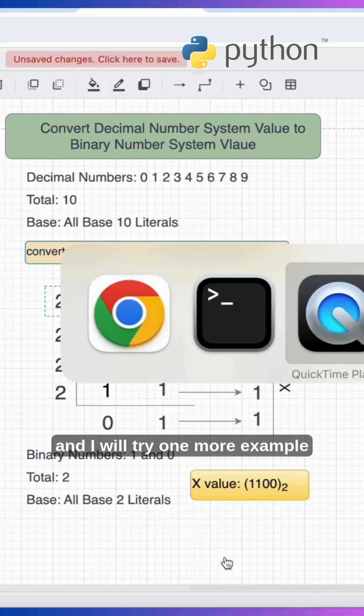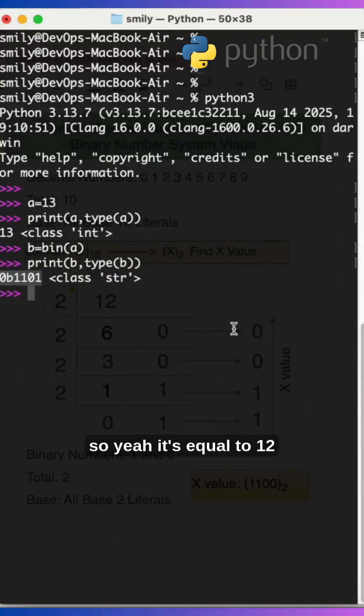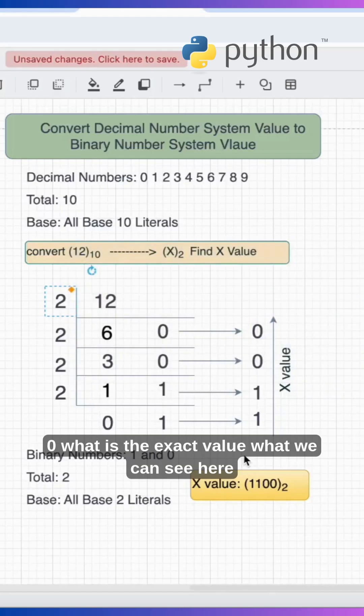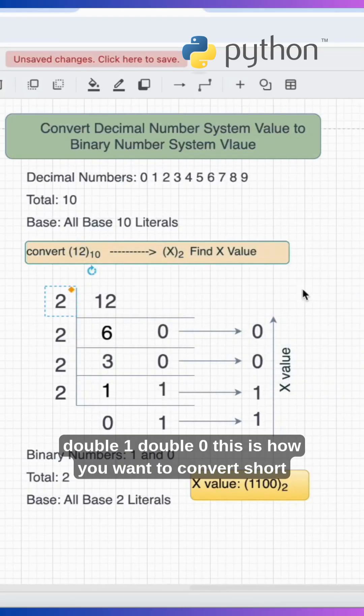I will try one more example. A is equal to 12, and convert this to bin of a and print b value. So 1100 - what is the exact value we can see here? 1100, this is how you convert.